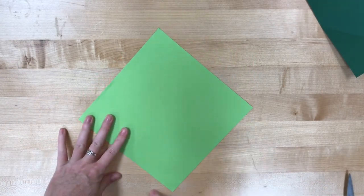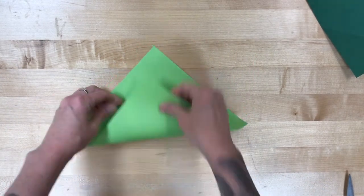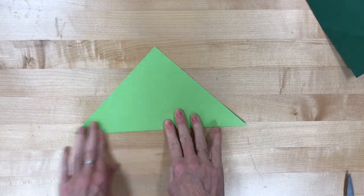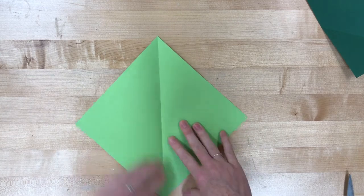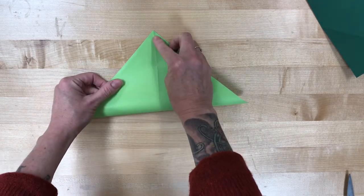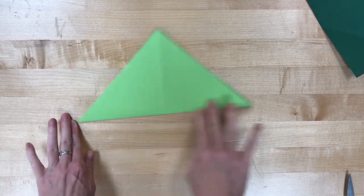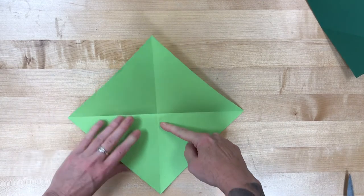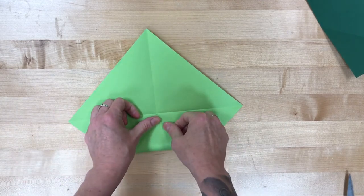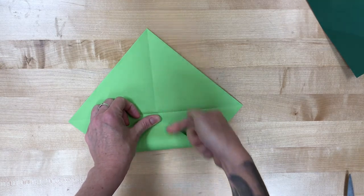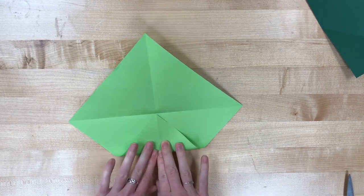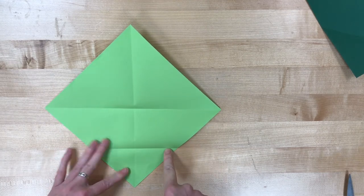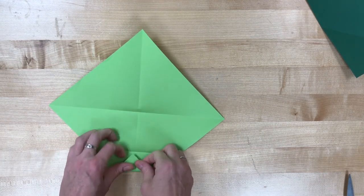So number two, we're going to turn our paper on the diagonal and bring the bottom point up to the top point. Unfold, twist, and do the same thing. So from corner to corner, we want straight lines running across our paper. Then I'm going to take the bottom point and fold it up to that middle line. Bring the bottom point up to the line that we just made.